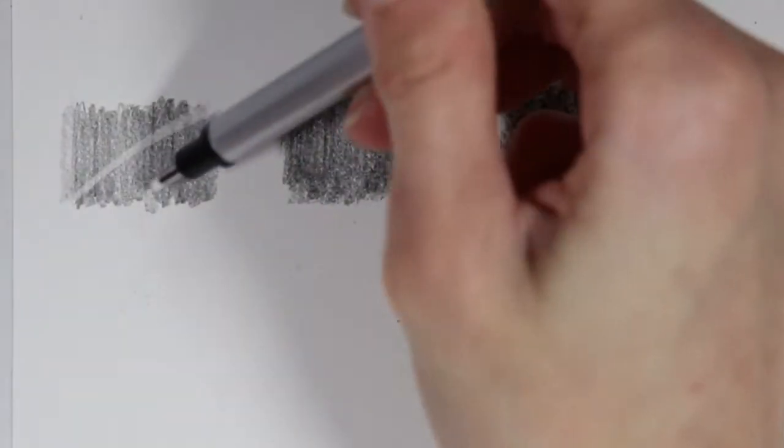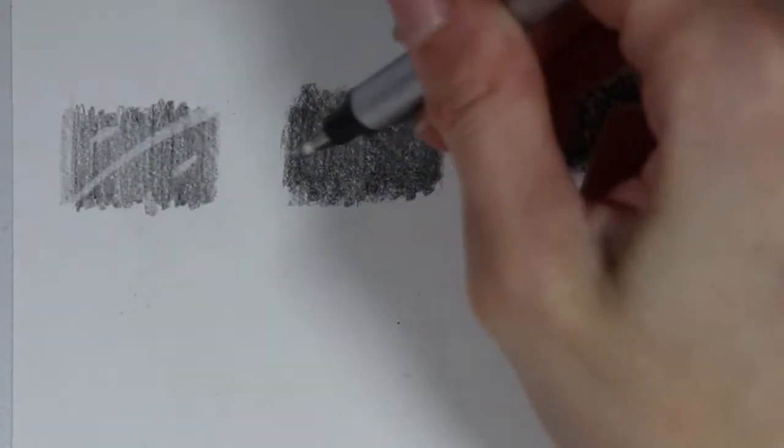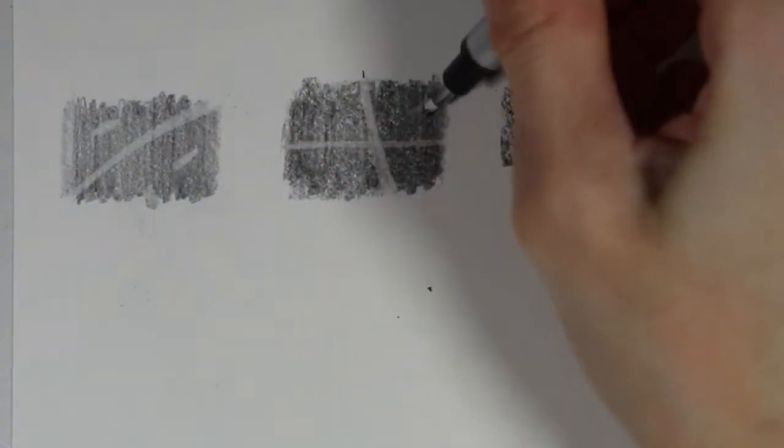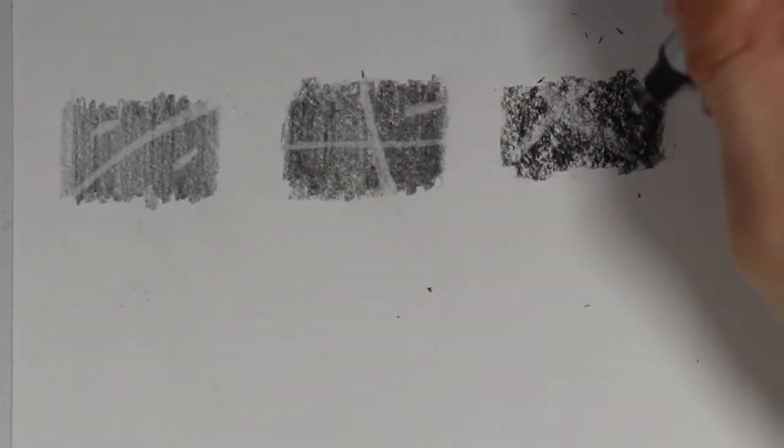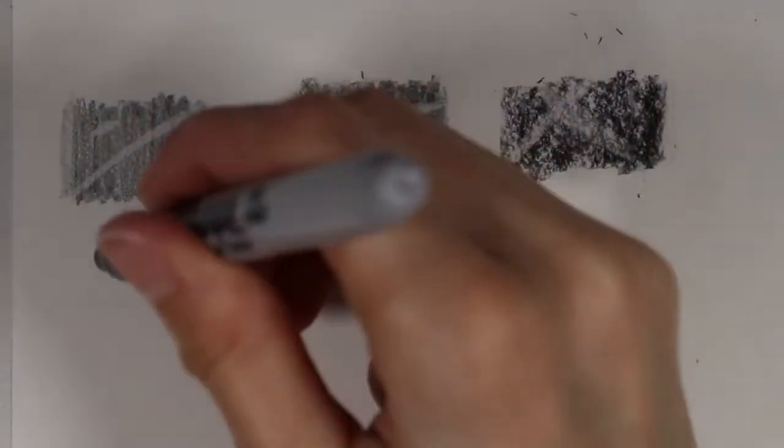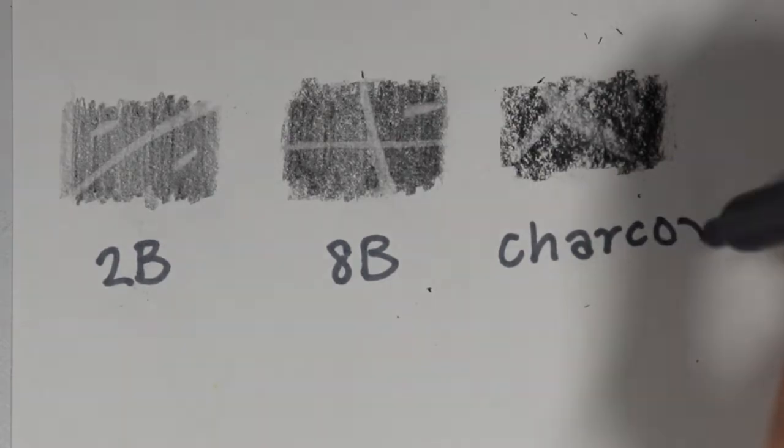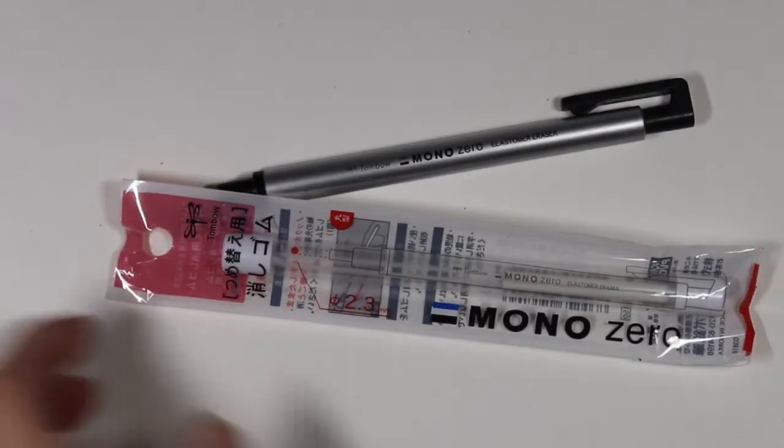What I love about this eraser is you can use it to pull up little highlights in your drawings, but you can also use it to erase little details or mistakes without disturbing the area around it. It's really hard to go in with a big bulky eraser and not disturb areas around where you're trying to remove a small mistake. So I really do recommend this.